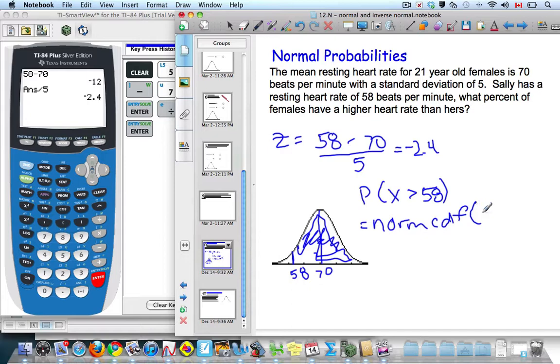And I'm going to go from negative 2.4 to a big number. So let's say 9, 9, 9, 9, 9, because I want big numbers over here.